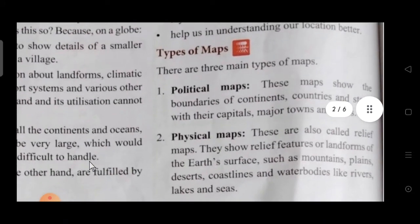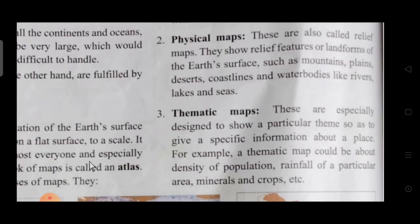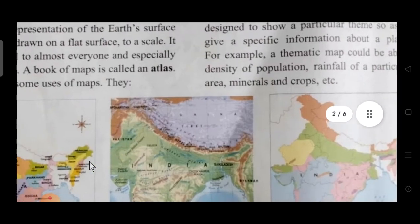We discussed political maps which show boundaries of continents, countries, states and capitals. Physical maps show landforms like mountains, plains, deserts, coastlines, and water bodies. Thematic maps are designed on any special theme like population, rainfall, crops, or minerals.